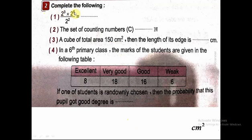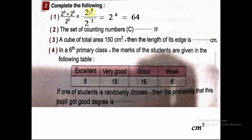Question number 2, complete: I have 2 to the power of 3, multiplied by 2 to the power of 5, over 2 to the power of 2. When we have the same base in multiplication, I keep the base 2 and add the powers: 3 plus 5 equals 8. So 2 to the power of 8 over 2 to the power of 2 — in division I subtract the powers: 8 minus 2 equals 6. So it's 2 to the power of 6, which equals 64.